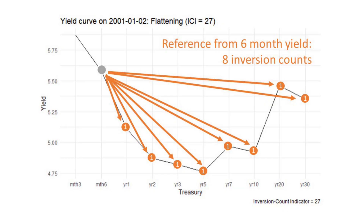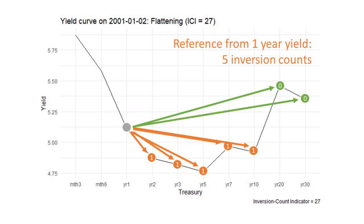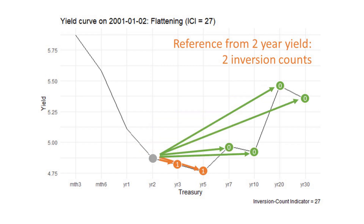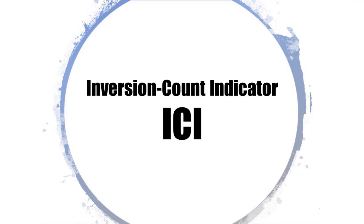When we are done using the 3-month as a benchmark, we move on to the next yield, the 6-month. And then we check: is the 6-month and the 1-year inverted? Is the 6-month and the 2-year inverted? And so on. Every single time there's an inversion, we give a score of 1. Because this solution counts the number of inversions, I gave this solution the nickname the Inversion Count Indicator — short form, ICI.